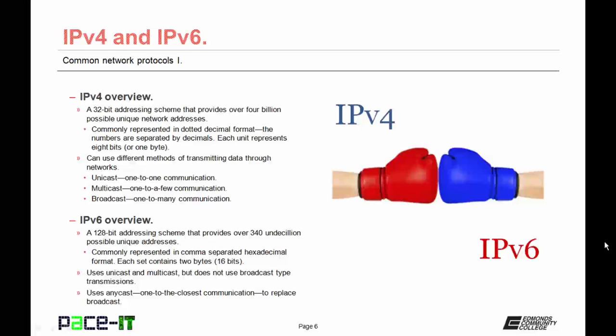Starting with IPv4: it's a 32-bit addressing scheme that provides over 4 billion possible unique network addresses. It's commonly represented in a dotted decimal format, with numbers separated by decimals, and each unit represents 8 bits or 1 byte. IPv4 can use different methods of transmitting data: unicast, which is 1-to-1 communication; multicast, which is 1-to-a-few communication; or broadcast transmissions, which is 1-to-many communication.